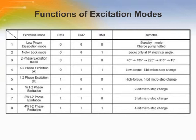This slide shows the excitation modes. There are eight excitation modes defined by: low power dissipation mode, motor lock mode, two-phase excitation mode, one-to-two phase excitation low torque, one-to-two phase excitation or two-bit microstep change, two-W one-to-two phase excitation or three-bit microstep change, and four-W one-to-two phase excitation or four-bit microstep change.